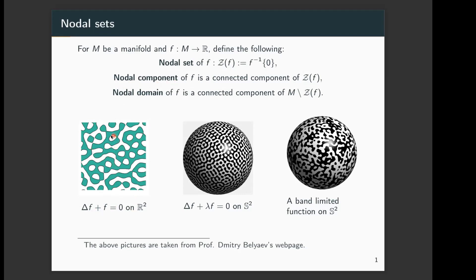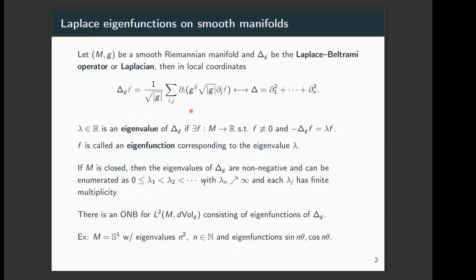What is an example of a nodal domain in this picture? This white blob here is an example of a nodal domain, and its boundary, which is a simple closed curve, is an example of a nodal component. I'll come back to these pictures in a bit.